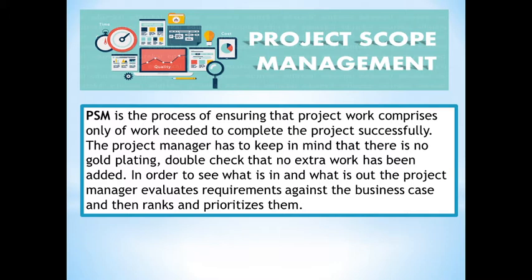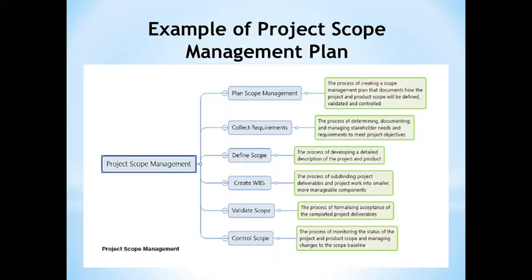Here is an example of a project scope management plan. First, plan scope management — this is where we focus on how to plan the scope management activities. Next is collect requirements: the process of determining, documenting, and managing stakeholder needs and requirements to meet project objectives. This is one of the most important processes, where we reach out to stakeholders to identify their needs and requirements.